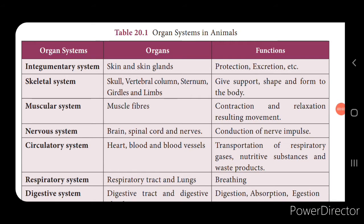You know very well that the organ level of organization is present in the human body. Cells are the basic fundamental units, and these cells are grouped together to form tissues, tissues into organs, and two or more organs work together to form the organ system — performing functions like digestion, circulation, transmission of nerve impulses, and excretion. Today we are going to learn about the digestive system, excretory system, and reproductive system in human beings.